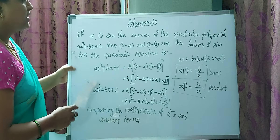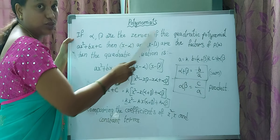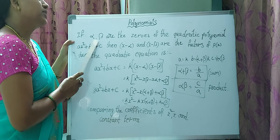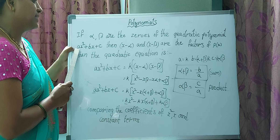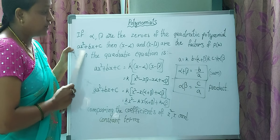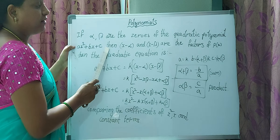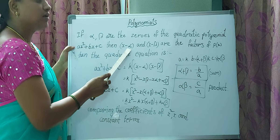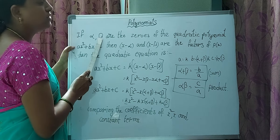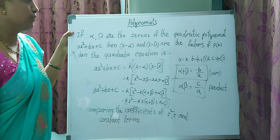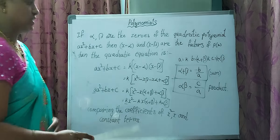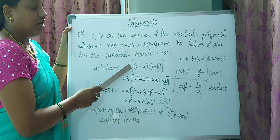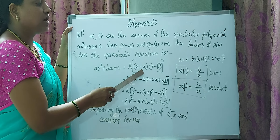If alpha and beta are the zeros of the quadratic polynomial ax² + bx + c, then (x - alpha) and (x - beta) are the factors of p(x). The quadratic equation can be written as k times (x - alpha)(x - beta), where k is a constant.